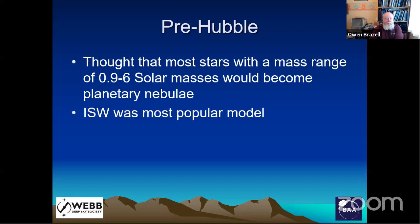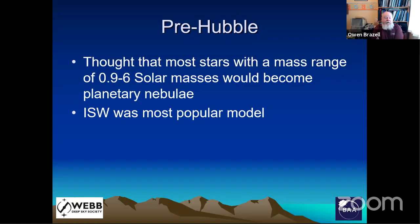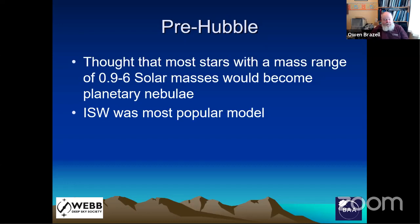So what did we think these are? Pre-Hubble Space Telescope, we thought most stars with a mass range of roughly 0.9 to 6 solar masses would become a planetary nebula. The most popular model is the interacting stellar winds, or ISW, where the assumption is that as a star enters the later stages of its life, it starts to lose mass — unlike most humans, which seem to gain mass. This mass is lost in a stellar wind during the red giant and AGB stage, eventually exposing the hot core, which provides a fast wind and high-energy ultraviolet photons that ionize the gas and push it out to form the shapes we see.